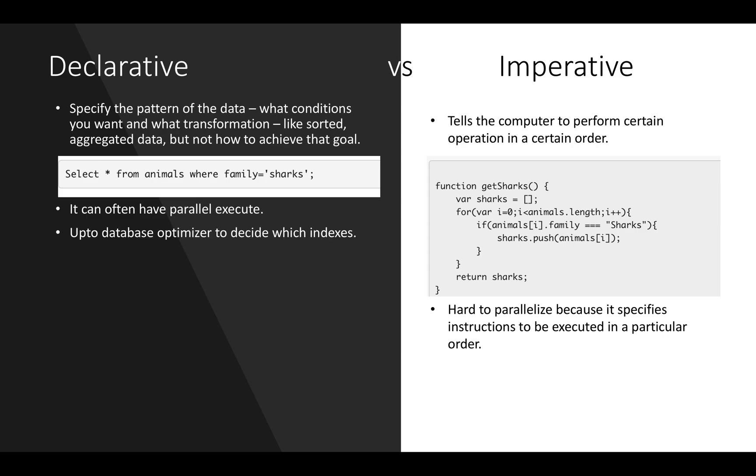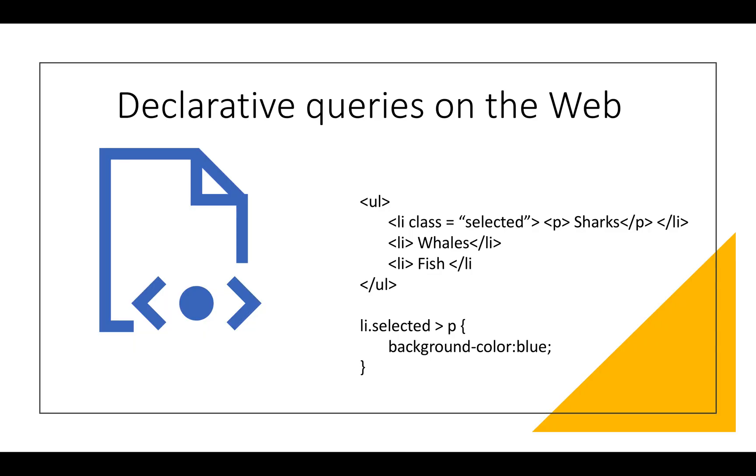In the declarative languages, it is up to the data optimizer to decide which indexes to use, which join methods to use. Declarative languages do not only happen in databases. Web browser languages also follow a declarative pattern. For example, we have a web page where sharks, whales and fishes are sub pages of it. So when a user opens the sharks page, this list item gets selected, its style gets changed. So if in future we want to change the background color of the selected page to blue, we'll just specify an element li.selected where the background color is blue.